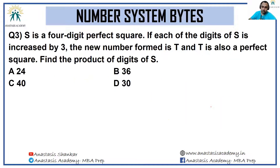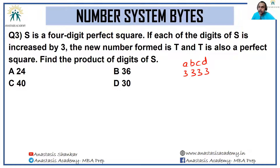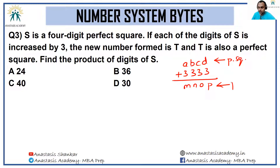Next: S is a four-digit perfect square. If each digit of S is increased by 3, the new number formed is T, which is also a perfect square. Find the product of digits of S. Let the four-digit number be abcd; adding 3 to each digit is essentially adding 3333 to it, reaching a new number. Both the original and the new number are perfect squares.